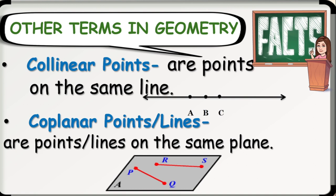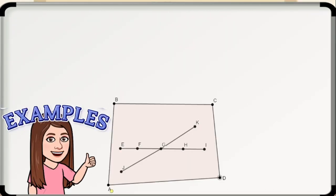On the other hand, we can say that we also have coplanar points. These are point P, point Q, point R, and point S. Let's have some examples. Using the figure below, name the following.